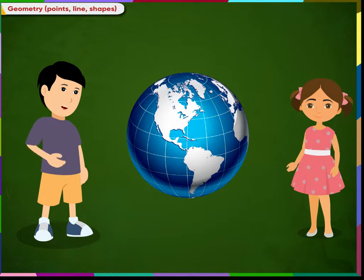Now look at this globe. When I move my hand over its surface, my hand does not move in a straight line. It moves in a curved manner.